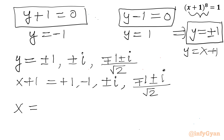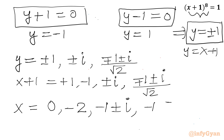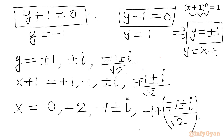Subtracting 1 from both sides gives the final solutions for x: x = 0, x = -2, x = -1 ± i, and x = -1 + (∓1 ± i)/√2. This gives all eight solutions and brings the end of the video.